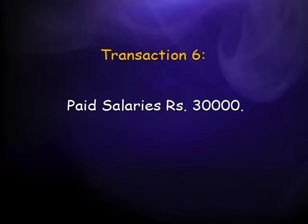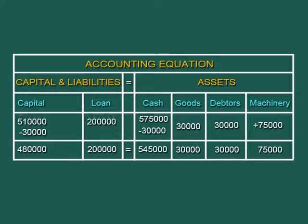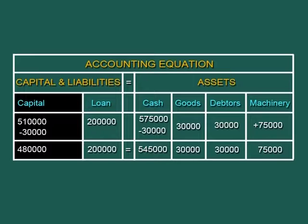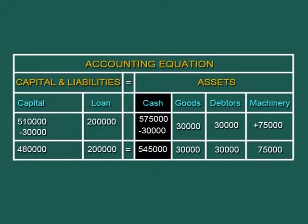Sixth transaction: we paid salaries of rupees 30,000. Cash decreases by 30,000 and since salary is an expense, it decreases profitability and is transferred to the capital account, so capital decreases by 30,000 rupees to become rupees 4,80,000. Cash decreases to rupees 5,45,000, and the total of both sides of the equation becomes rupees 6,80,000.